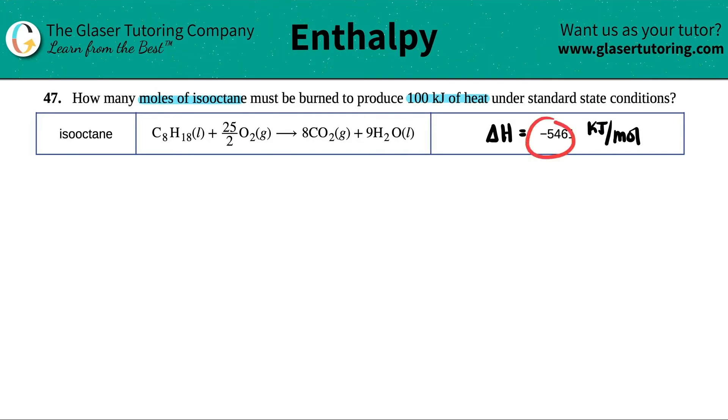So in this case, I know that I'm releasing heat because it's a negative. That's all that the negative is. There's really nothing that means that there's negative heat. The negative just means that you're losing heat. How much are you losing? 5,461 kilojoules per mole.